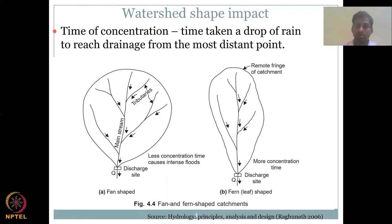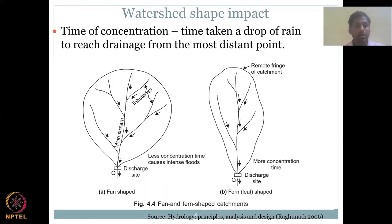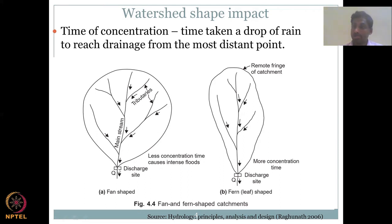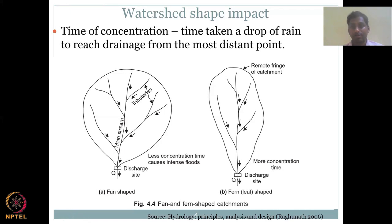In a fan-shaped watershed, the river networks are spread out more widely. The area may be the same between a fern-shaped and fan-shaped watershed — the fern is elongated while the fan is stout — but the stout one has a shorter concentration time, causing intense floods, because water from the distant point can quickly reach discharge point Q. In the elongated shape, water has to pass through fewer channels, takes longer to reach Q, and that can actually reduce the flood.